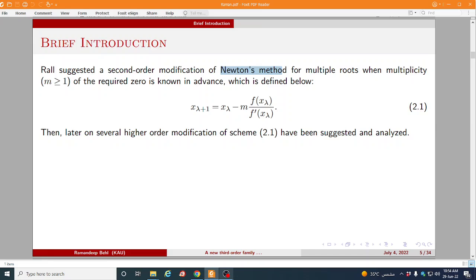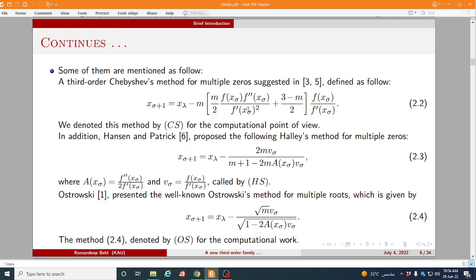Raoul suggested a second order modification of one of the famous method that is known as Newton's method for the multiple roots. So he introduced here multiplicity m with this multiplicity m, the method now converge quadratically even for the multiple roots. Even if you choose m is equal to 1 then this method is known as simple Newton method.